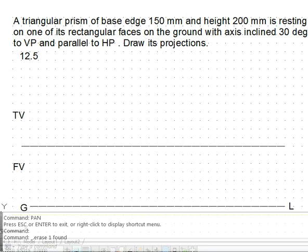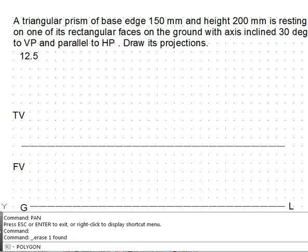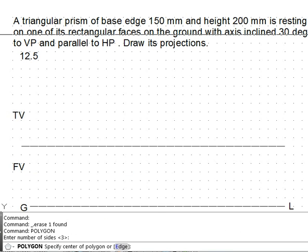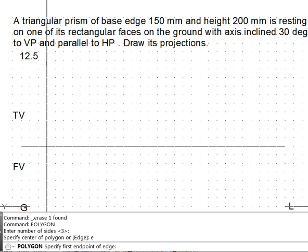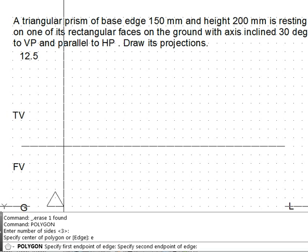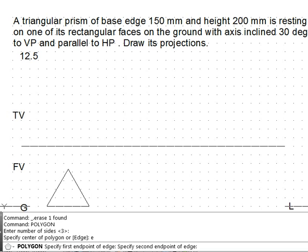To apply the initial condition, we start the projection with the front view. In the command prompt I type polygon with three sides, use the edge command, and the rectangular face has to lie over the ground in this orientation. The edge dimension is given — the base edge is 150 mm, so I have chosen six grid spaces as per our scale.